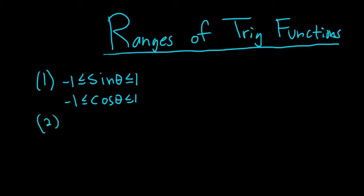Two, tangent and cotangent can be any number. So tangent and cotangent of theta can be any number. This can be any number, it can be 7, it could be any number. The range of these functions is all real numbers.